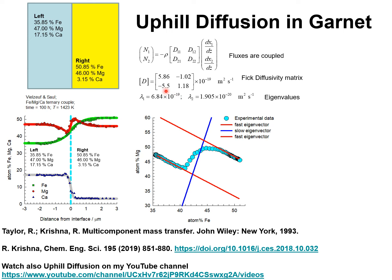We note that the cross coefficient d21 is larger in magnitude and opposite in sign to the diagonal element d22. In the system numbering, component two is magnesium, and the large negative off-diagonal element is the root cause of the undershoot and overshoot in the composition profile for magnesium as it approaches equilibrium. There are two eigenvalues of this diffusivity matrix: the larger one has magnitude 6.84 × 10⁻¹⁹ square meters per second, and the second eigenvalue is 1.905 × 10⁻²⁰ square meters per second.